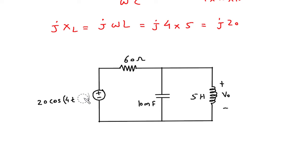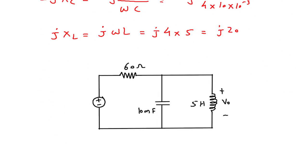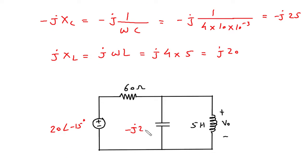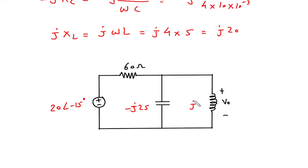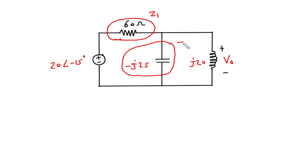Now we will draw the circuit in the frequency domain. The source Vs = 20∠−15° volt. The resistance is 60 Ω as it is. Instead of 10 mF, this will be −j25. Instead of 5 Henry, this will be j20. We label these as Z1, Z2, and Z3, with Vo across Z3.